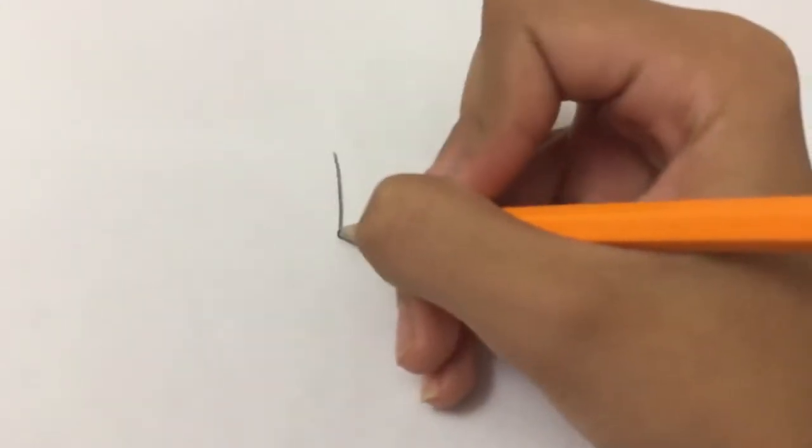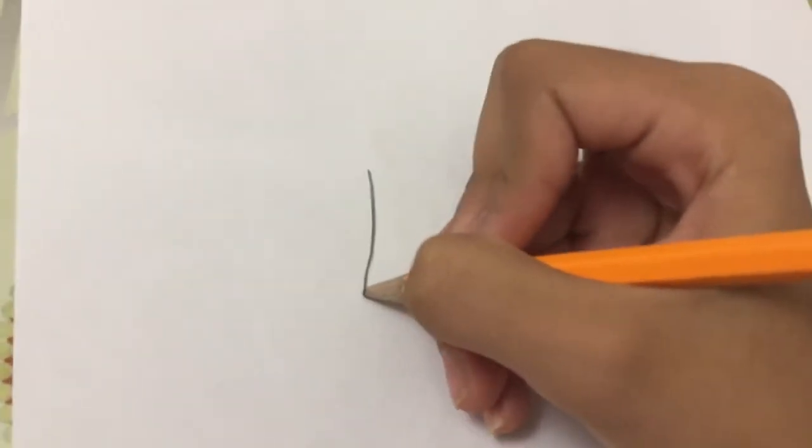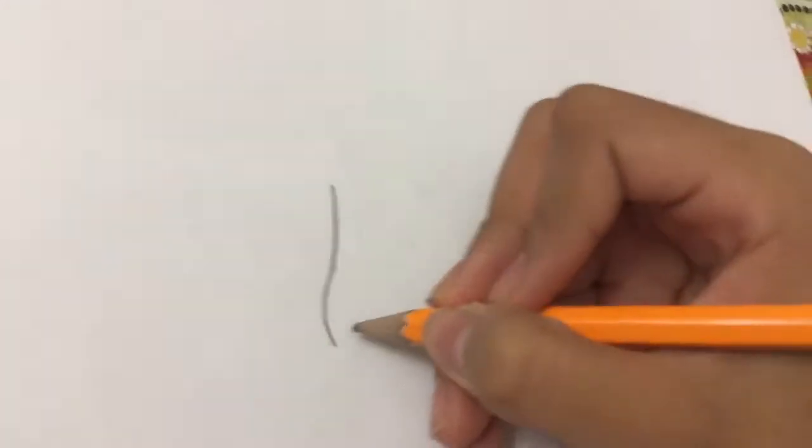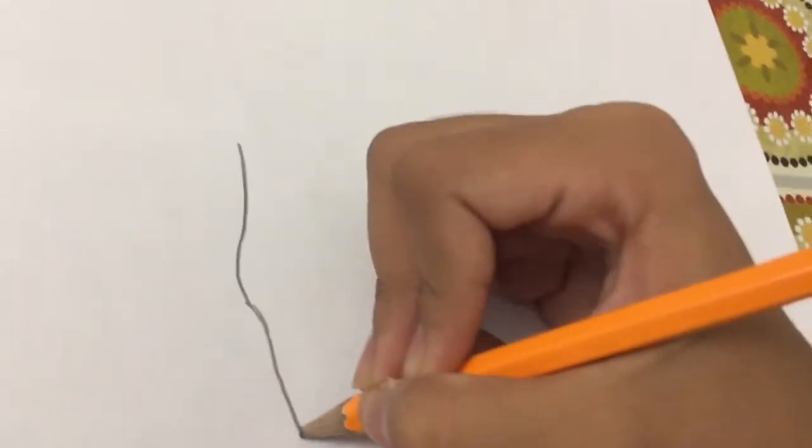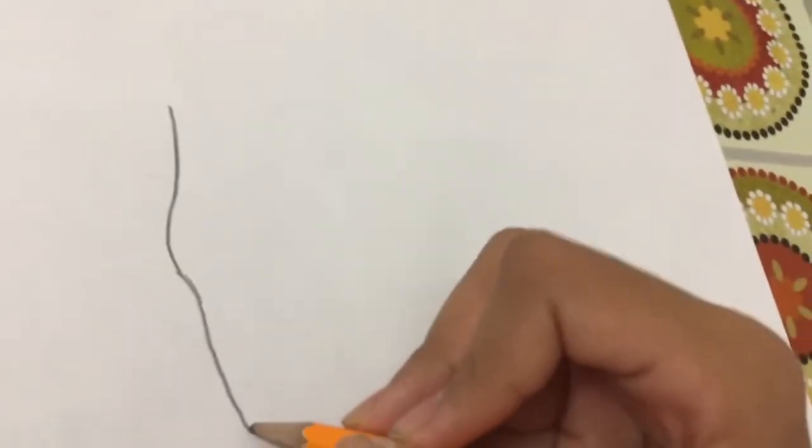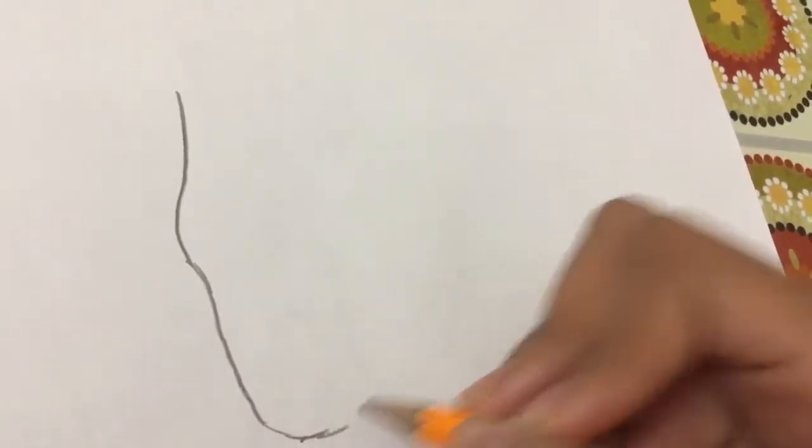First, you'll draw his face. You'll draw a curve, then curve in, then out, like this. And he has a really boxy chin, so yeah, like that.